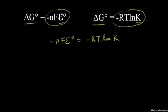Now let's solve for E zero, the standard cell potential. To do that, we need to divide both sides by negative NF.